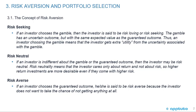Risk Seeking – If an investor chooses the gamble, then the investor is said to be risk loving or risk seeking. The gamble has an uncertain outcome but with the same expected value as the guaranteed outcome. Thus, an investor choosing the gamble means that the investor gets extra utility from the uncertainty associated with the gamble.